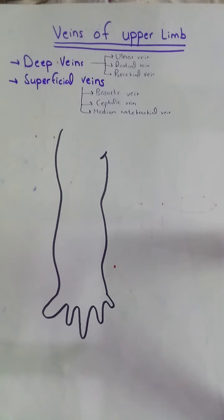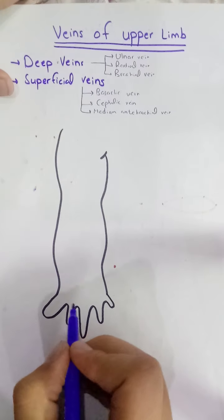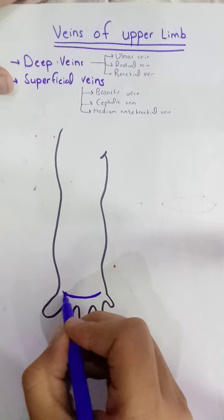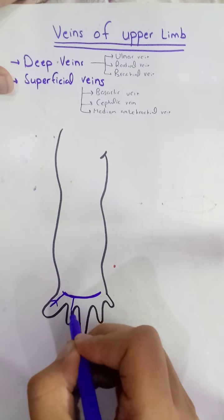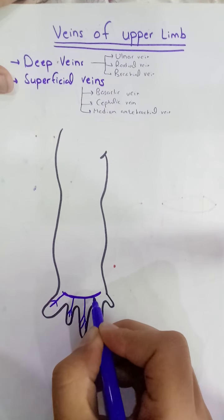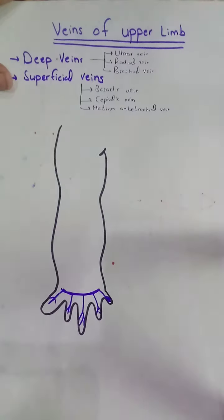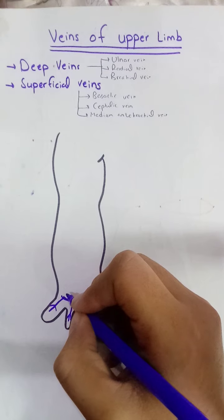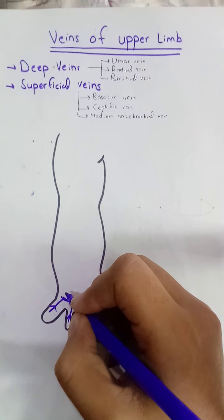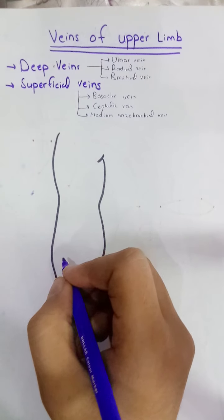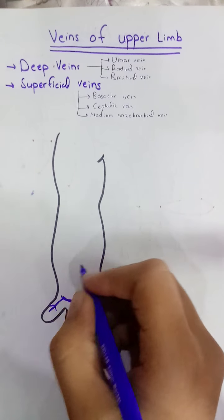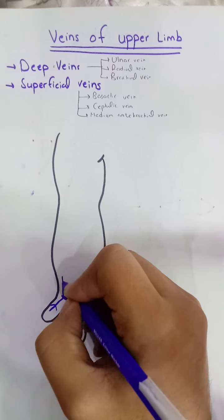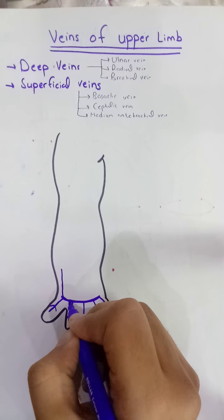First of all, there will be a deep venous arch on the hand which will drain the blood from all parts of the hand. From its lateral side will originate the cephalic vein, and on its medial side will be the basilic vein.